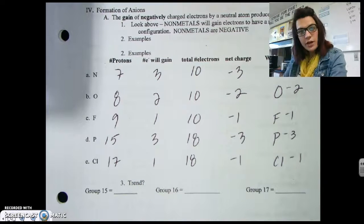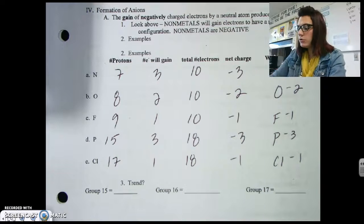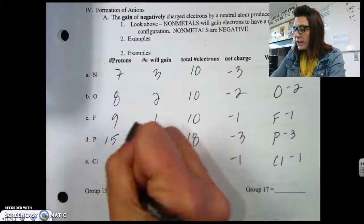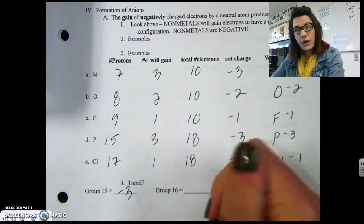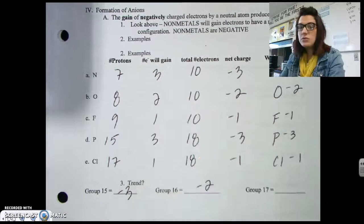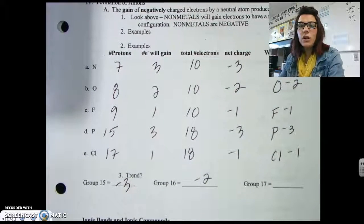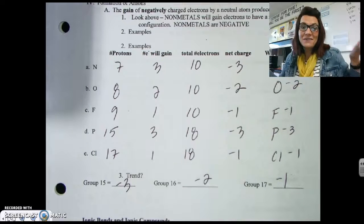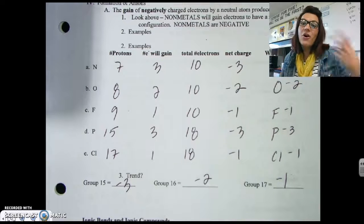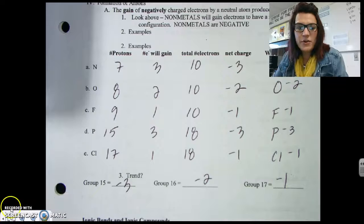Take a second to do phosphorus and chlorine. We see the same trend based on the family where elements are found. Group 15, where nitrogen is, forms a negative three charge. Group 16, where oxygen is, forms negative two charges. Group 17, where our halogens are, forms negative one charges. That's it for this video — hopefully you understand cations and anions better now. Thank you.